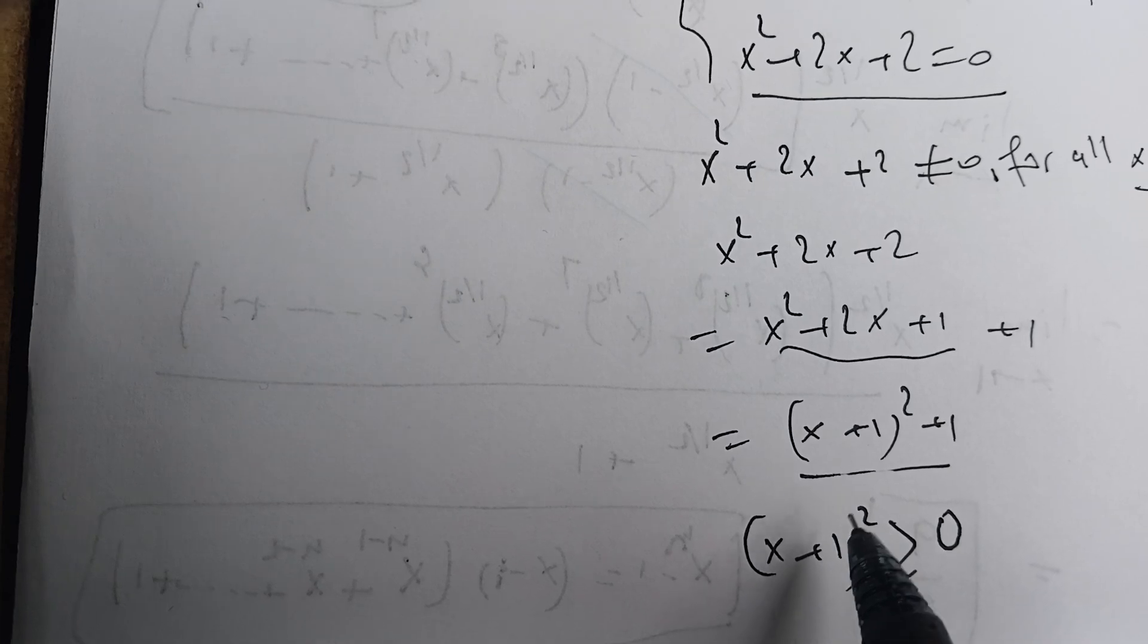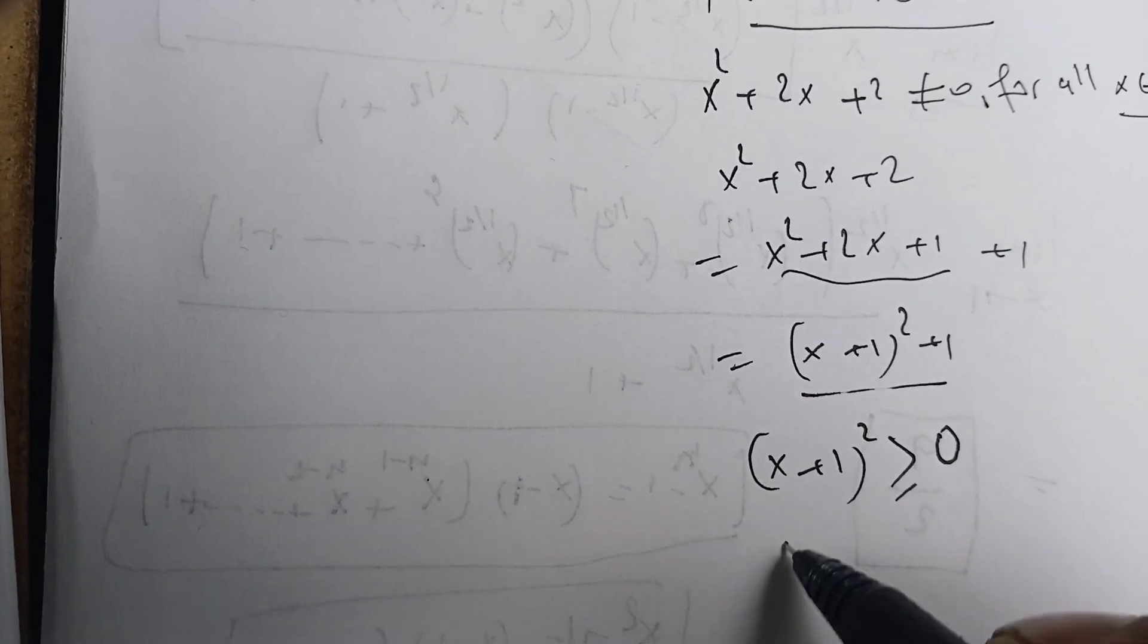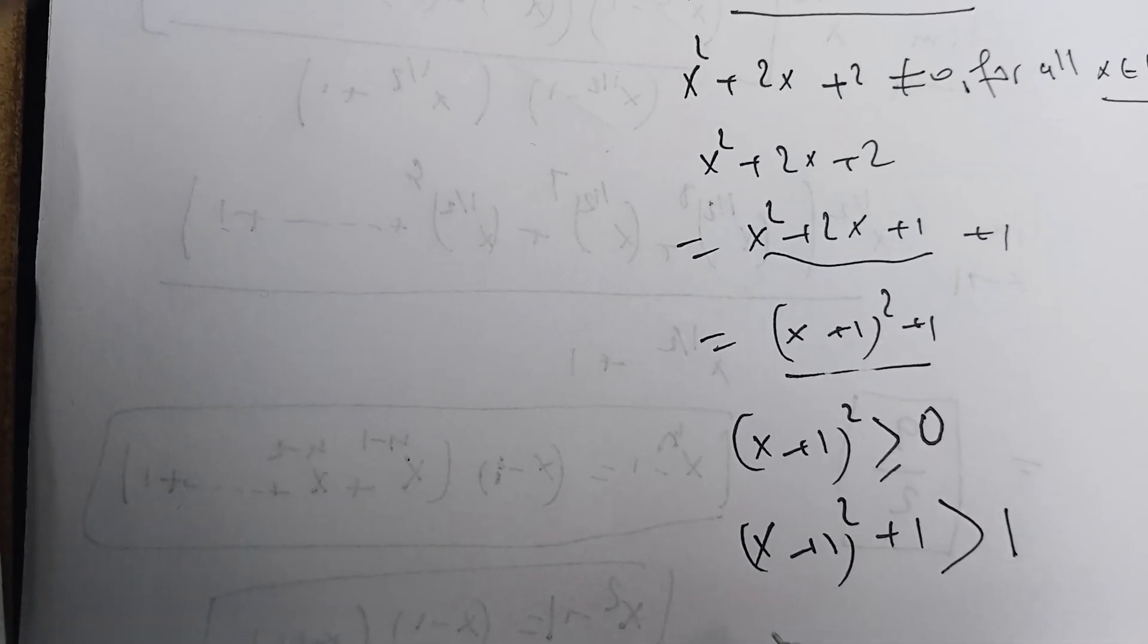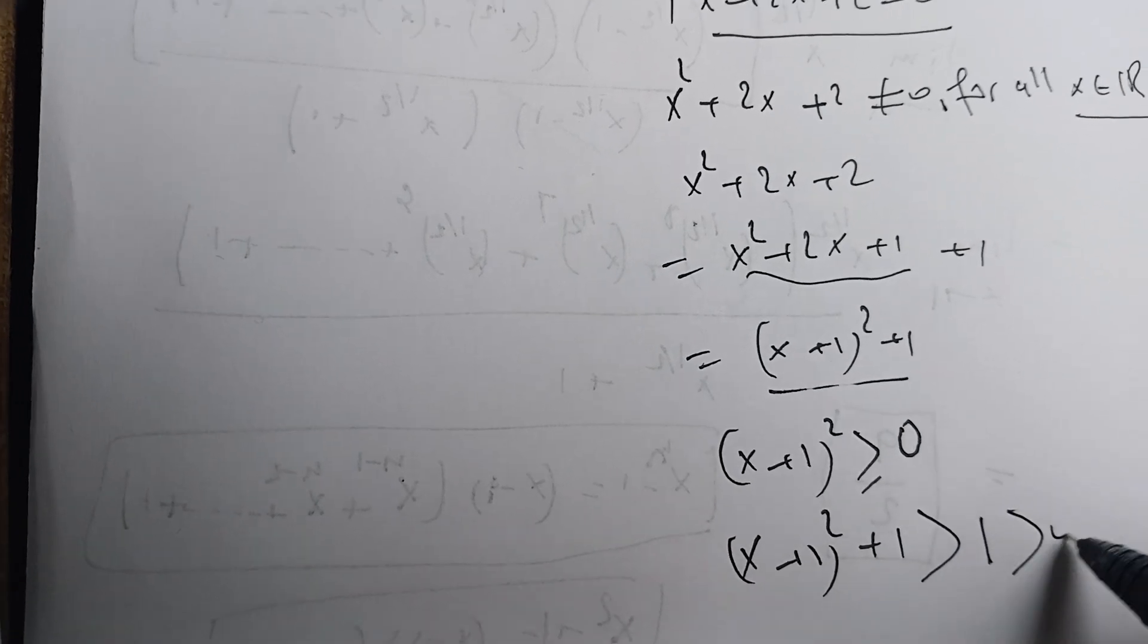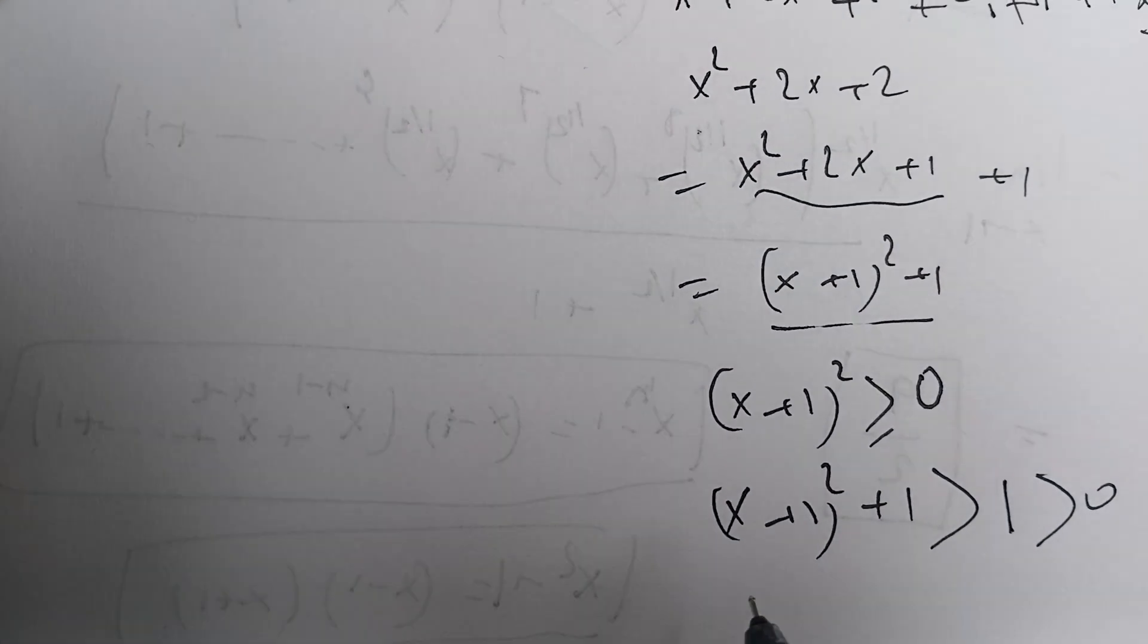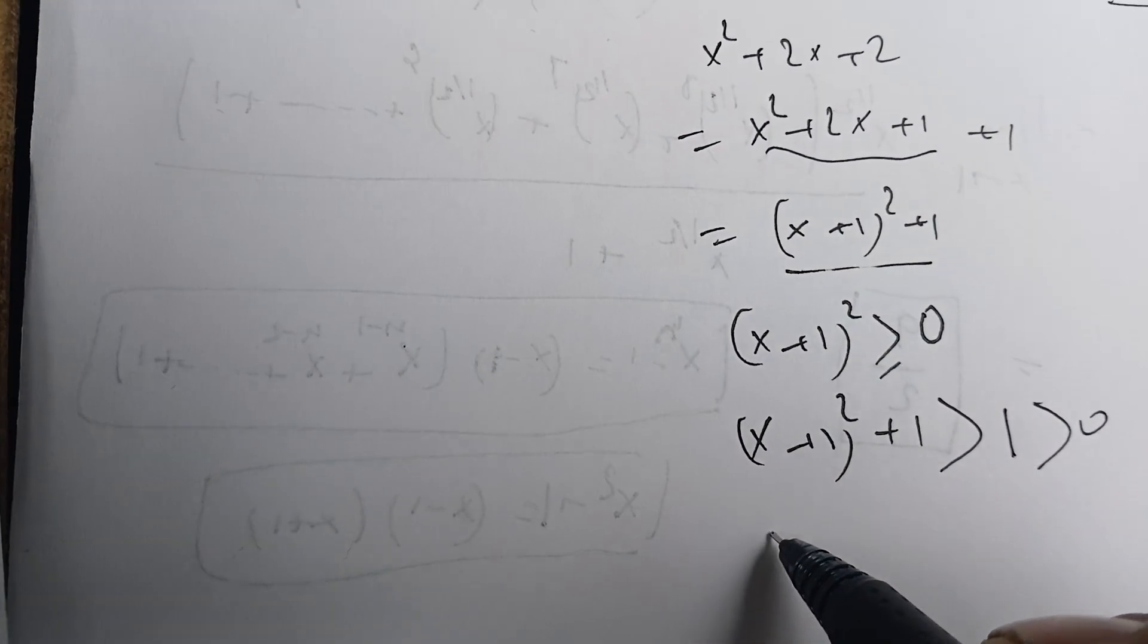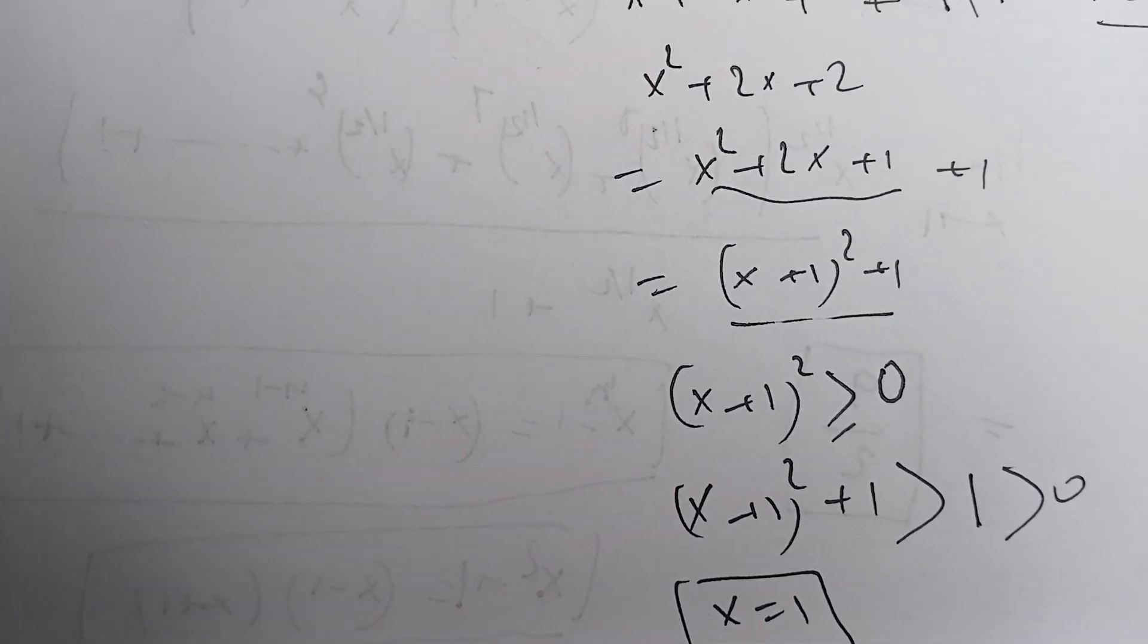When x is minus 1 it's always greater or equal than 0. When we add 1, we have x plus 1 squared plus 1 strictly bigger than 0. That means it's always bigger than 0, so it's never 0. Therefore the only solution is x equals 1, there is no other.